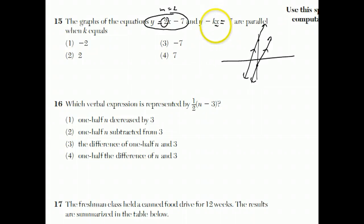So then the question is, if I rearrange this y minus kx equals 7 by adding kx to both sides, I get y equals kx plus 7. So for that to be parallel, the k has to be 2.